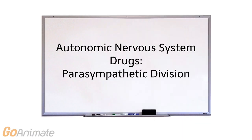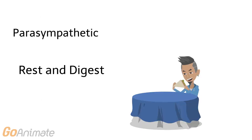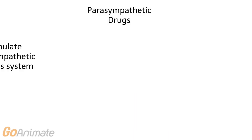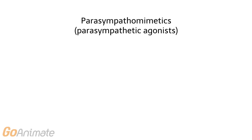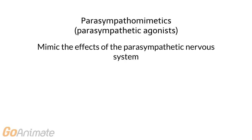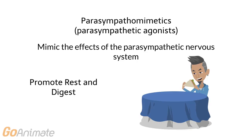Let's learn about autonomic nervous system drugs that affect the parasympathetic nervous system. The parasympathetic nervous system promotes the rest and digest response. Parasympathetic drugs will either stimulate or inhibit the parasympathetic nervous system. Parasympathomimetics, or parasympathetic agonists, mimic the effects of the parasympathetic nervous system and promote the rest and digest response.